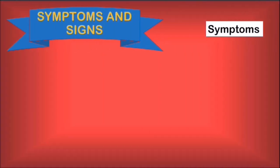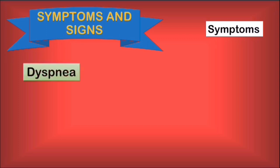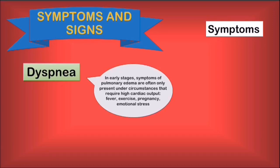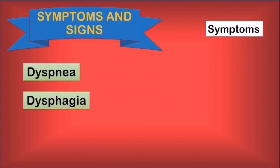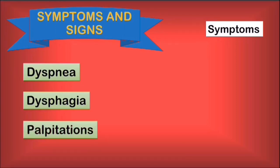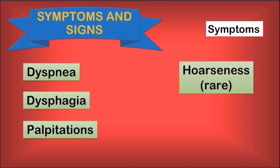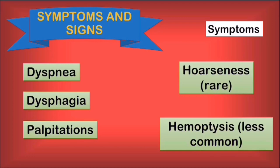Moving on from pathophysiology, we will discuss the signs and symptoms of mitral stenosis and what causes them. Dyspnea is caused by the pulmonary edema, making it harder for the patient to breathe. In early stages, symptoms of pulmonary edema are often only present under circumstances that require high cardiac output, such as fever, exercise, pregnancy, or emotional stress. Dysphagia appears because of the esophagus compressed by the left atrium. Palpitations appear due to the atrial fibrillation. Hoarseness, which is rare, is caused by the compression of the left recurrent laryngeal nerve. Finally, although less common, hemoptysis can develop as a result of ruptured small vessels due to the increased pulmonary vascular pressure.